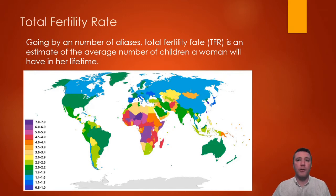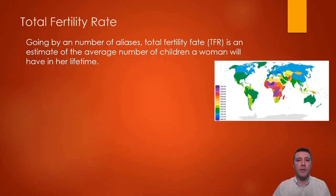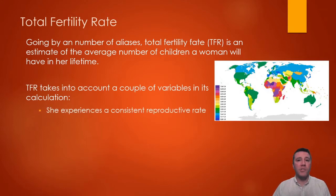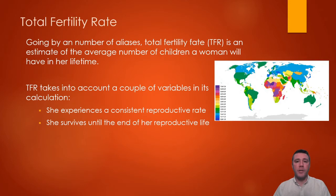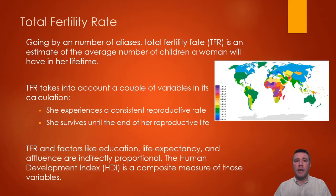In order to determine TFR, two important variables must be taken into account. The first is that a female experiences a consistent reproductive rate throughout her childbearing years — generally accepted to mean a female between the ages of 15 and 49 will produce children at a consistent rate throughout those years. The second variable relies on the female surviving to the end of her reproductive life; if she dies, for example, in her early 20s, she obviously won't be producing children in the future. The influences on total fertility rate can be grouped into three general categories: education, life expectancy, and affluence.